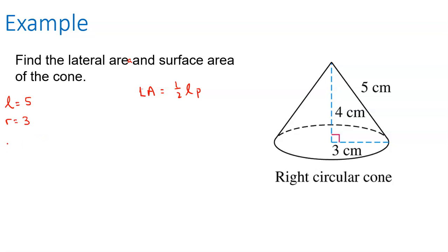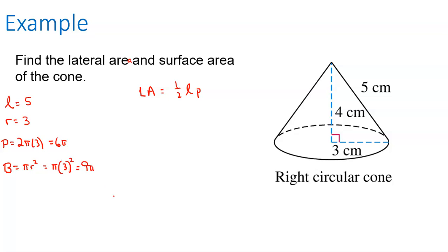The perimeter of the base, since it's a circle, is 2 times pi times the radius, so 6 pi. The area of the base is pi times 3 squared, which is 9 pi.